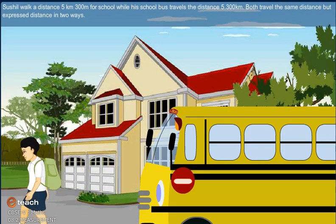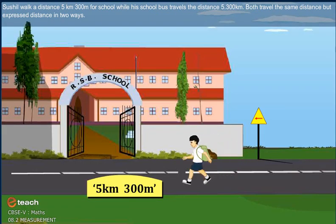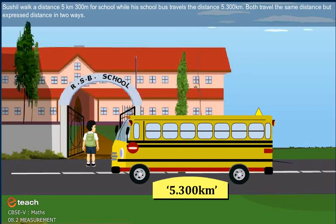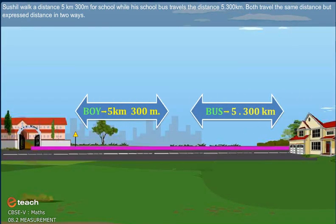Sushil walks a distance of 5 km 300 m for school, while his school bus travels the distance 5.300 km. Both travel the same distance but express distance in two ways.